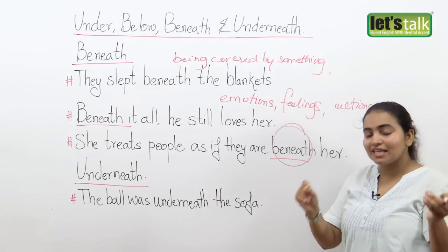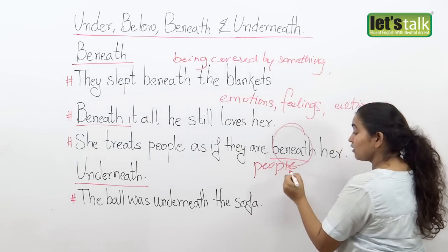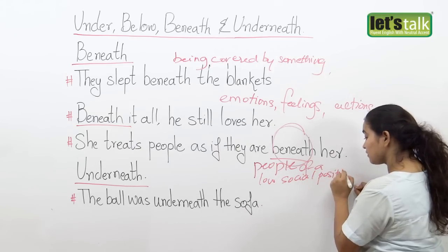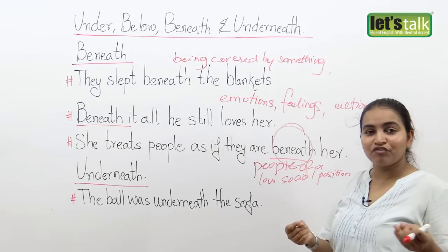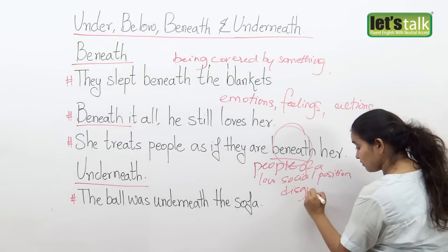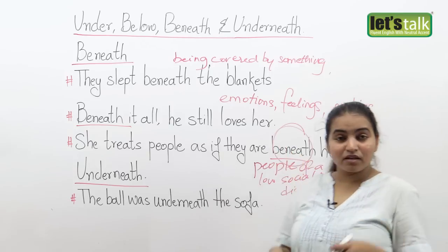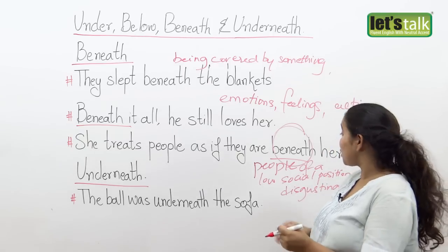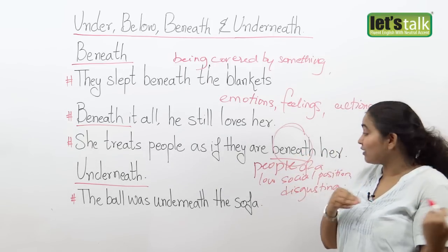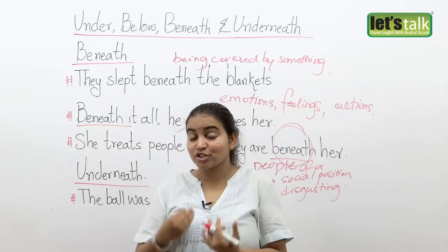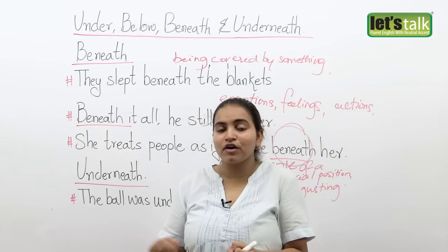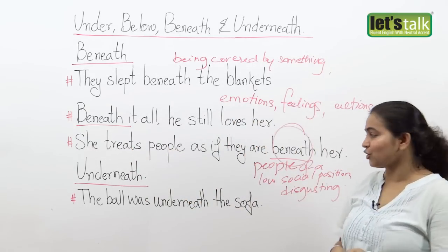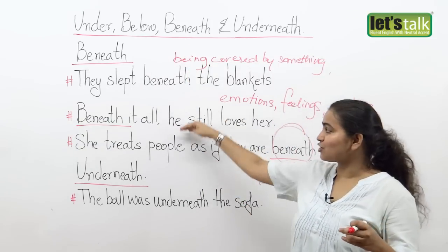Then you have a sentence like: she treats people as if they are beneath her. Here the word beneath talks about people of a low social position, or someone you find very disgusting. I could say: the guy is offensive — he is completely beneath me. That is a very high-handed way of saying it. But we talk about people being beneath us when referring to people who have a low social position compared to us, or people we don't like, who we find very disgusting or offensive.